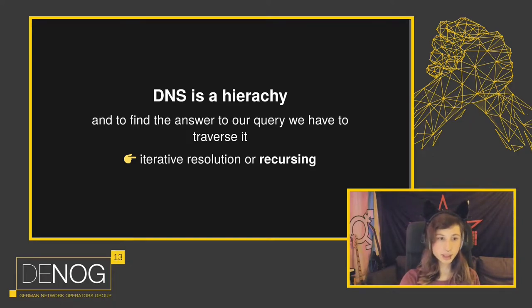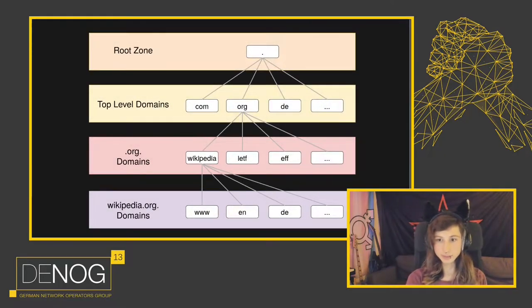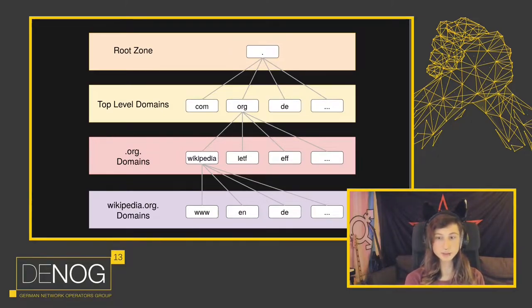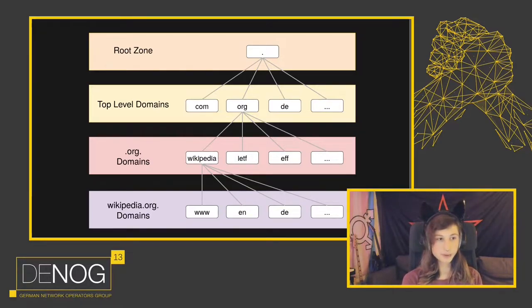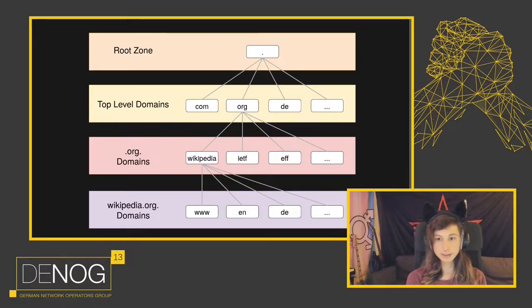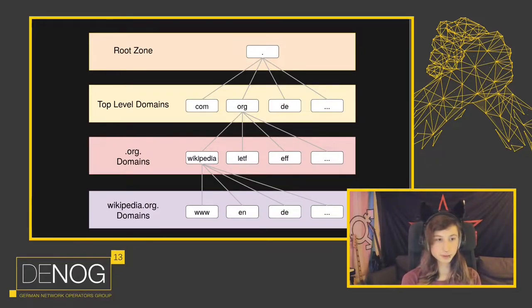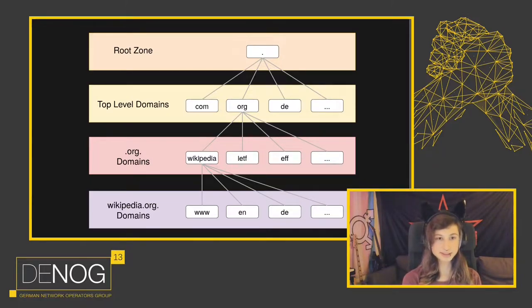So when our recursor gets a request, it will traverse the whole DNS zone. For example, if we want to look up de.wikipedia.org, our server will first ask the root zone. Then the root zone will tell it to look at the designated servers for .org. Those will forward it to the server for Wikipedia and so on, until it gets its answer.